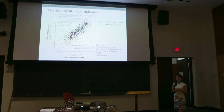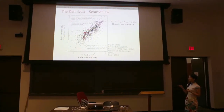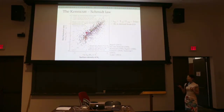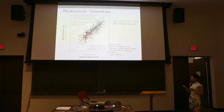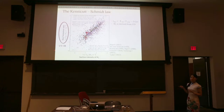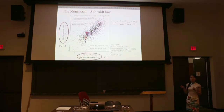This is one of the most famous relations for star formation. The surface density of H2 on the x-axis and the star formation rate on the y-axis has a linear relation, with a constant depletion timescale of about 2 gigayears. However, neither axis is directly observable. The star formation rate is derived from UV and infrared radiation, and the H2 surface density is actually derived from CO, because H2 does not emit at very low temperatures.